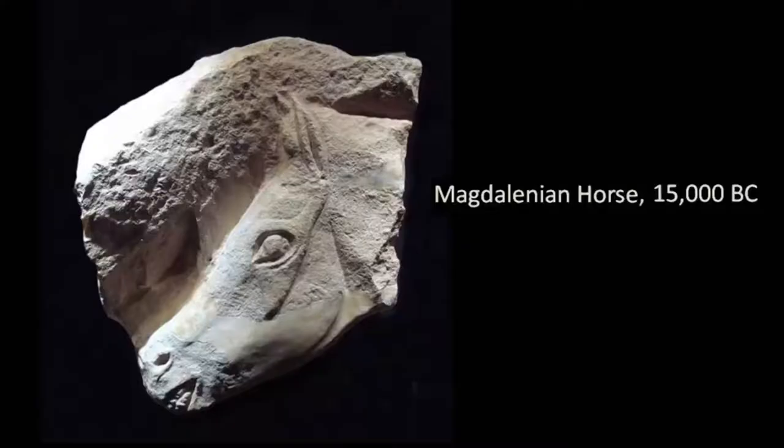The Magdalenian horse, dating to around 15,000 BC, is pretty realistic in terms of proportion and anatomy compared to others, but it was also important that the sculptor had to squeeze this face of the horse within a very limited space. So like the painters, prehistoric sculptors also had to learn the technique of adjusting forms within a given space.